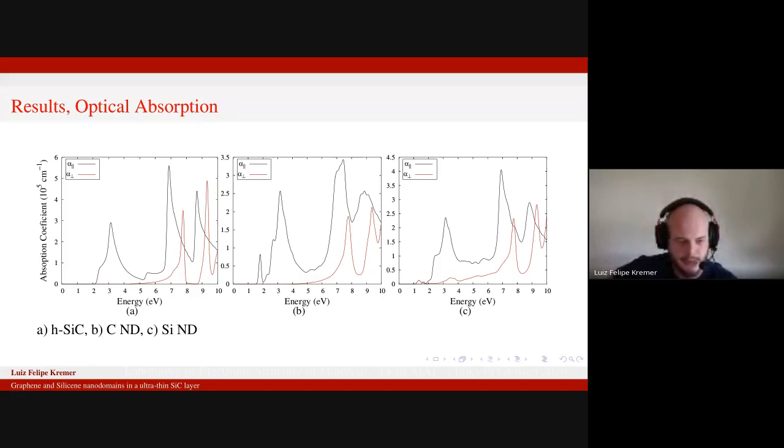So you have black lines and red lines, which means that when it's black, you have incident photons with polarization parallel to the plane of the layer. And when it's red, you have polarization perpendicular to the layer. As you can see, we only have strong peak absorption for parallel polarization for the pristine system, which is without defects.